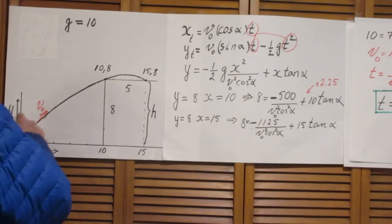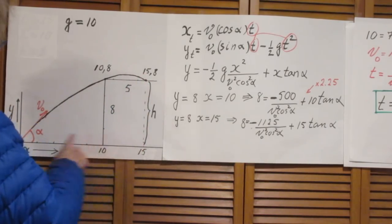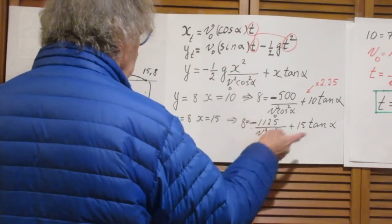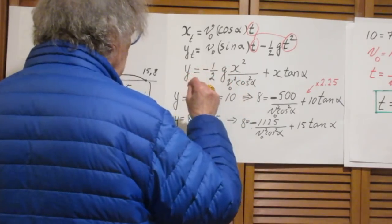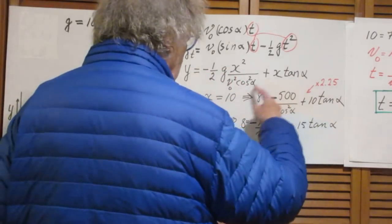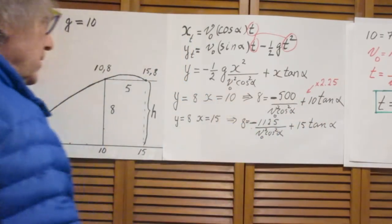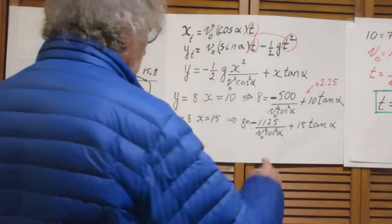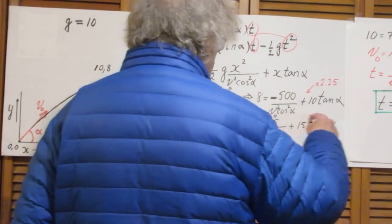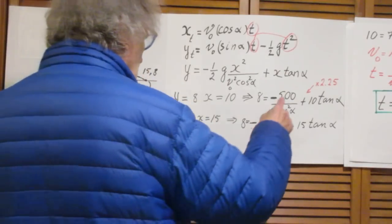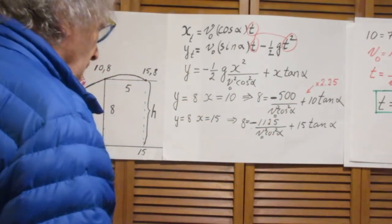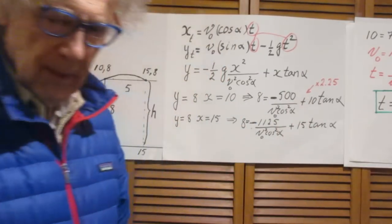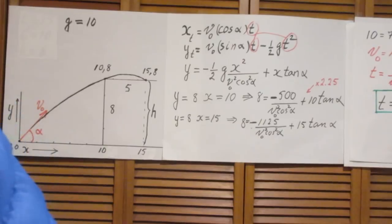But also when y is 8, x can also be 15. This is 15. So again, I substitute x equals 15. x equals 15 in here and y equals 8. So now I have two equations with two unknowns alpha and V0. So the fastest way I think to solve this is to multiply the upstairs equation with 2.25 because the 500 becomes then 1125. And you subtract the two and you get one equation in tangent alpha. Could not be easier.